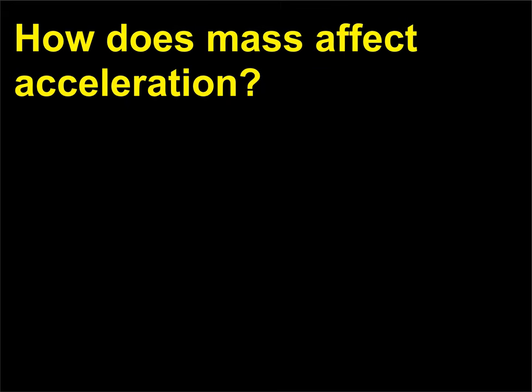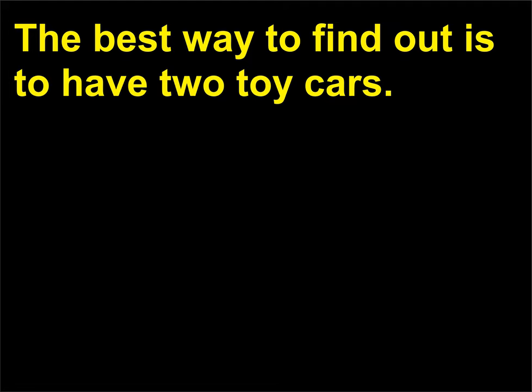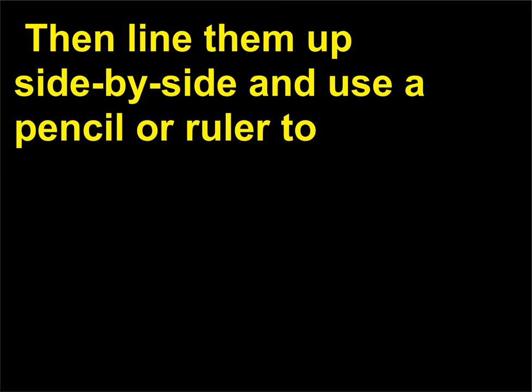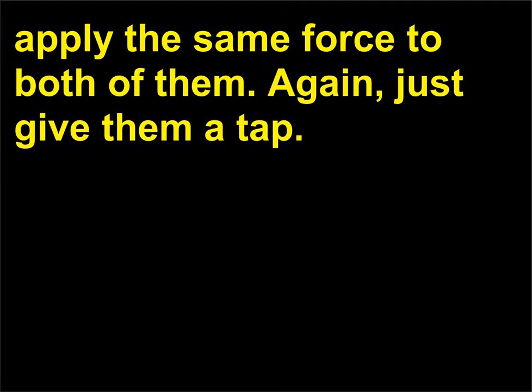How does mass affect acceleration? The best way to find out is to have two toy cars, then add some mass to one of them. For example, you could tape coins to the car. Then line them up side by side and use a pencil or ruler to apply the same force to both of them. Again, just give them a tap.